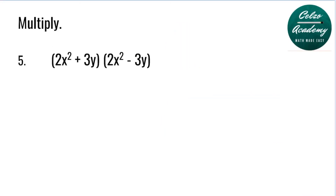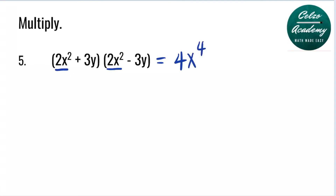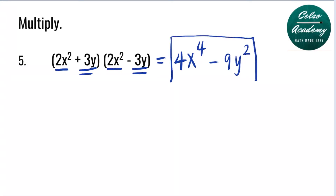Question number 5: (2x² + 3y) multiplied by (2x² − 3y). Question 5 is a product of sum and difference. The first step is to multiply the first terms 2x² and 2x², which is 4x to the fourth because you add the powers 2 and 2. Step 2, multiply 3y and negative 3y, and that is negative 9y squared because you add the powers 1 and 1. So the answer is 4x to the fourth minus 9y squared.